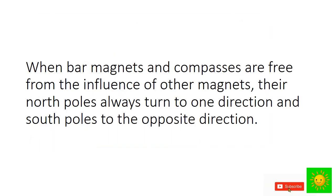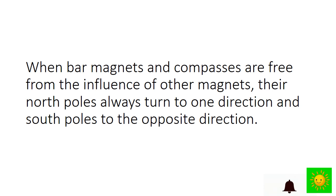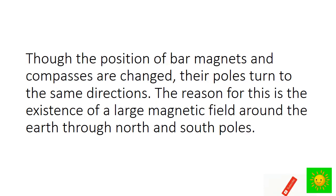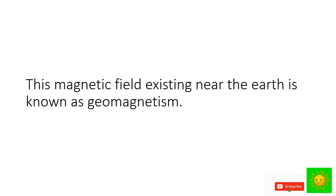When bar magnets and compasses are free from the influence of other magnets, their north poles always turn in one direction and south poles in the opposite direction. Even when the orientation of bar magnets and compasses is changed, their poles turn to the same directions. The reason for this is the existence of a large magnetic field around the Earth through the north and south poles.